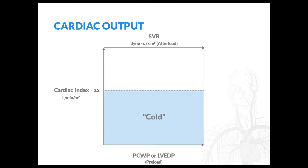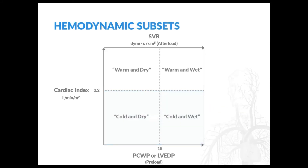In the absence of a PA catheter, inadequate cardiac output can be determined by signs and symptoms of poor tissue perfusion such as cold clammy extremities, altered mental status, or laboratory abnormalities indicative of poor end organ perfusion such as abnormal liver enzymes or elevated serum creatinine. Using this classification scheme, patients can be classified into one of four hemodynamic subsets. Subset one — warm and dry patients — are well compensated and hemodynamically stable.